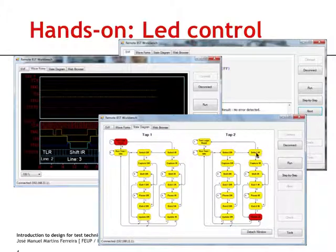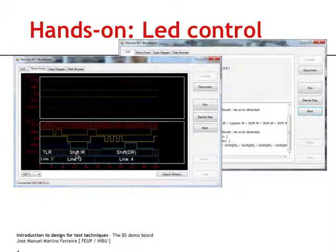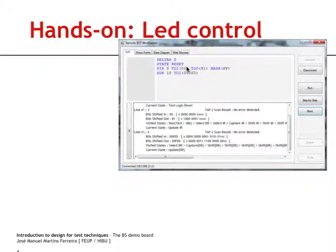We have an indication of the current state being shown in this part. So actually, you see that after these two pulses, we enter the shift instruction register state. We want to shift in all zeros, that is why TDI goes to zero and remains there for the following eight test clock cycles.